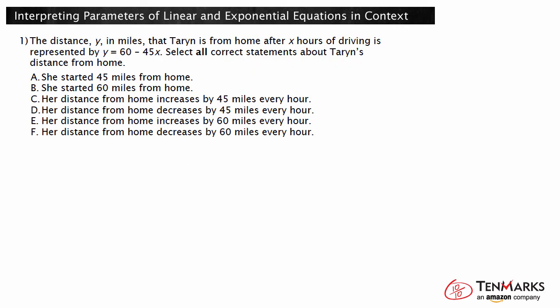Let's look at an example. The distance y in miles that Terran is from home after x hours of driving is represented by y equals 60 minus 45x. Select all correct statements about Terran's distance from home. Because x represents the number of hours, 45x represents the number of miles by which the distance from home changes in x hours. So the distance from home changes by 45 miles every hour. The coefficient of x is negative, so y values are decreasing.